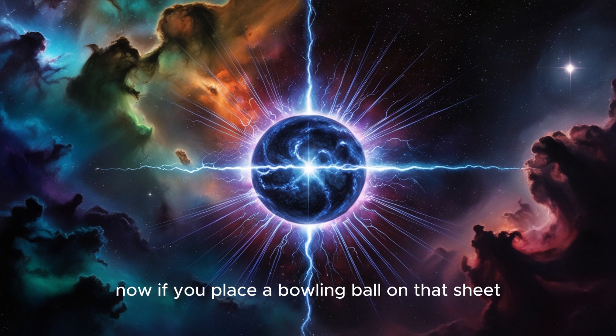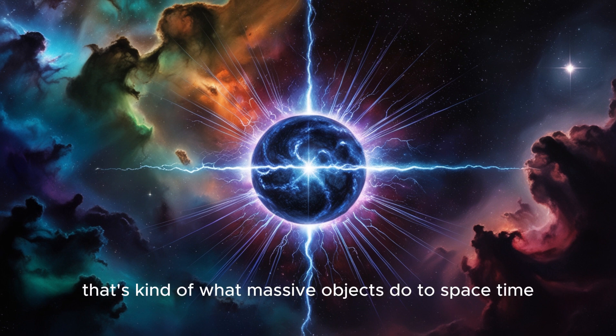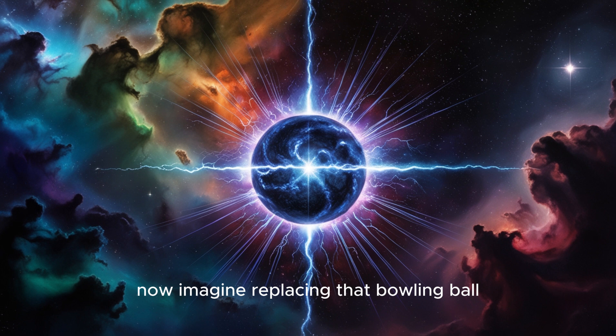All right, so imagine space-time like a giant rubber sheet. If you place a bowling ball on that sheet, the sheet curves downward. That's kind of what massive objects do to space-time—they create these dips, these curves. Now imagine replacing that bowling ball with something billions of times heavier, like a neutron star.